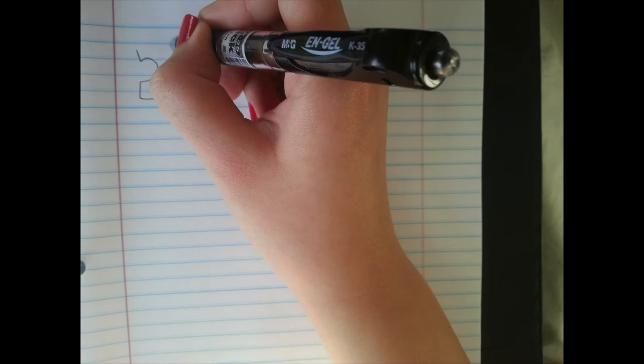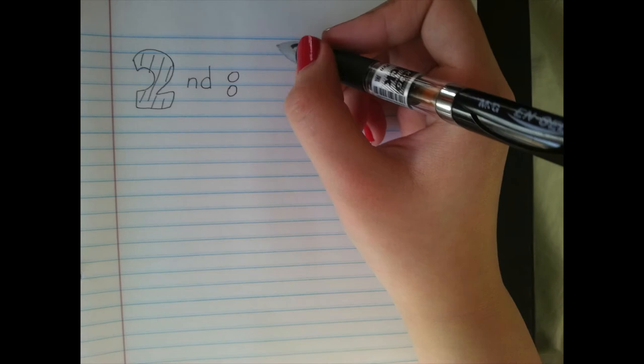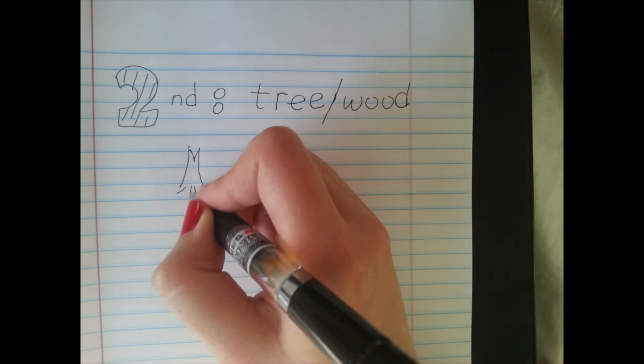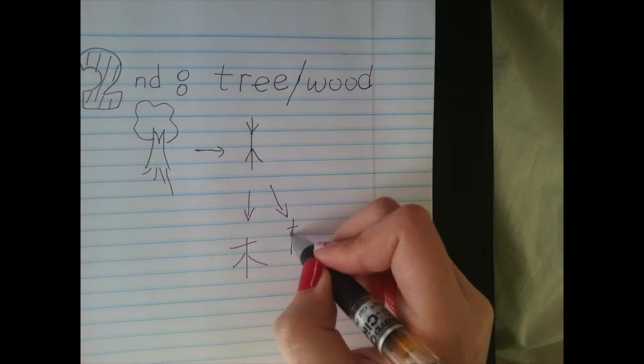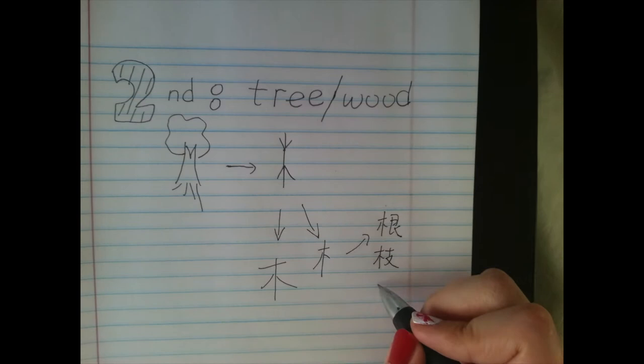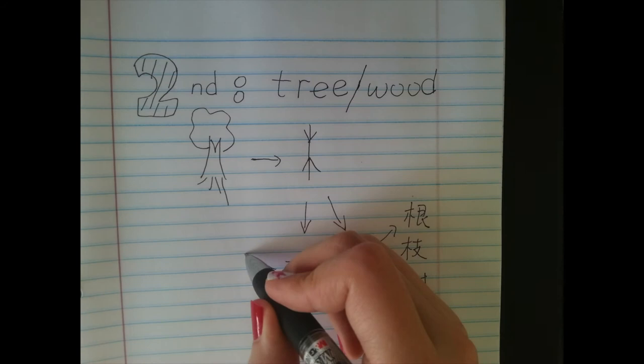And then let's talk about the word tree, or wood. Ancient people also drew pictures of a tree. And when it comes to characters, they drew branches up there and roots down there, and it makes the character for tree. Nowadays we write it like this. It's also a part of other characters, like a prefix, and every character that has this part is related to trees — like roots, branches, trees, and rotten.